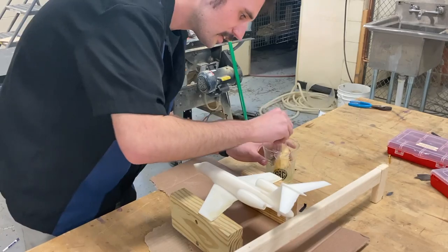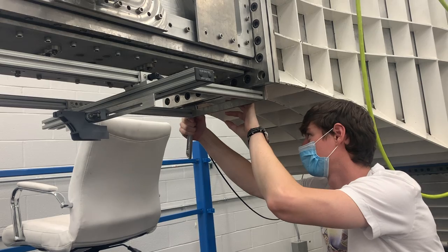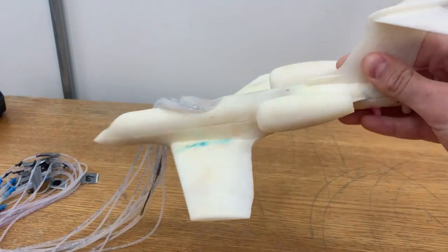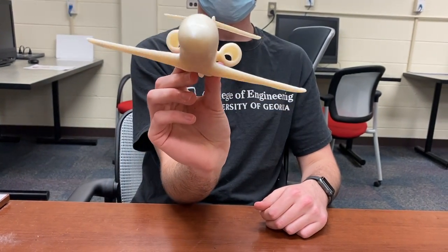This involved printing scaled models of the modified jet and using those 3D printed models in UGA's high-speed water tunnel. Two separate models were printed for two methods of fluid flow visualization: multi-dye injection and particle image velocimetry.